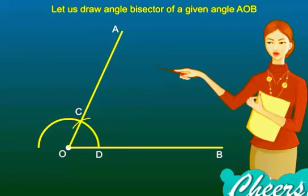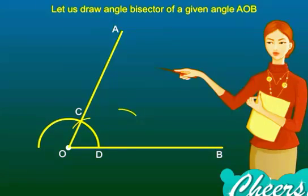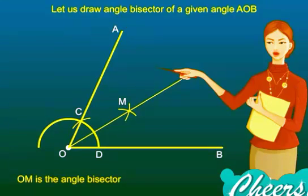Step 2: With C as center and radius more than half of CD, draw an arc in the interior of the angle. Step 3: With the same radius and D as center, draw an arc in the interior of the angle that cuts the previous arc at M. Then OM is the required angle bisector.